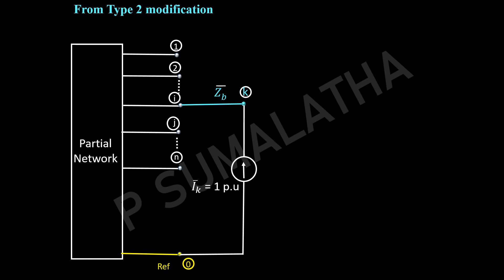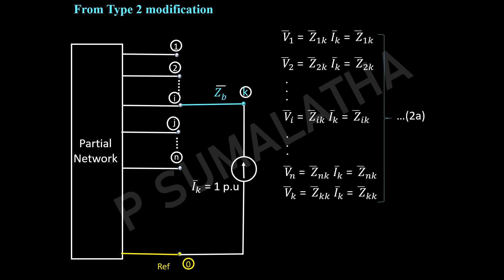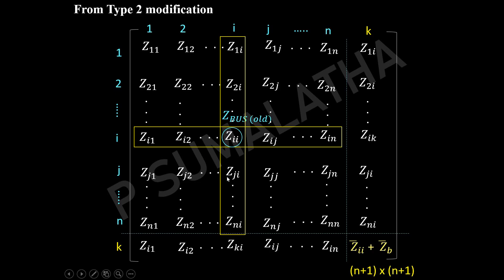We considered a partial network and connected a branch with impedance ZB between an old bus and a new bus. We injected a current of 1 per unit with respect to the new bus and obtained expressions for the voltages at each existing bus and at the new bus. Finally, the impedance with respect to the new branch is equal to Zii plus Zb.